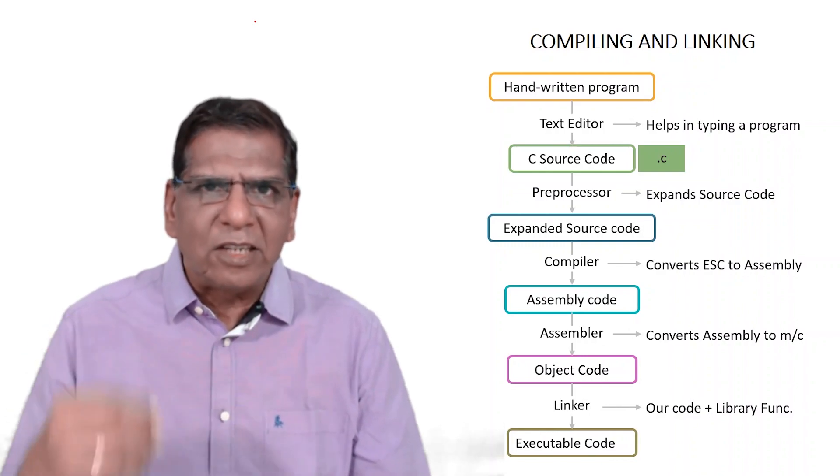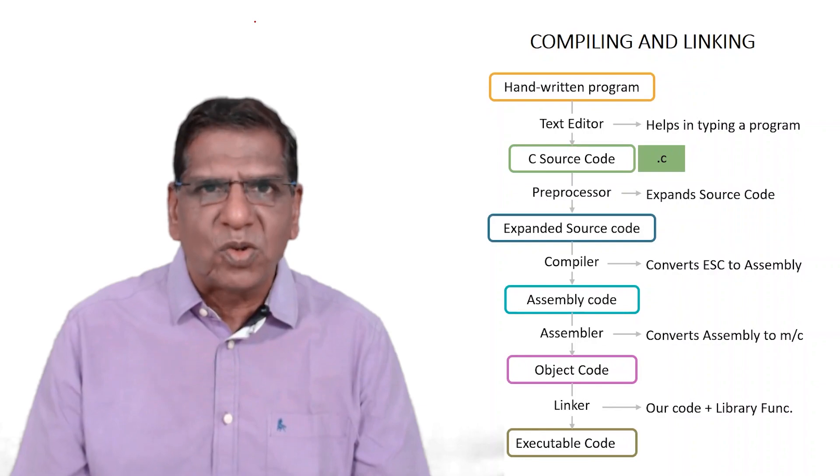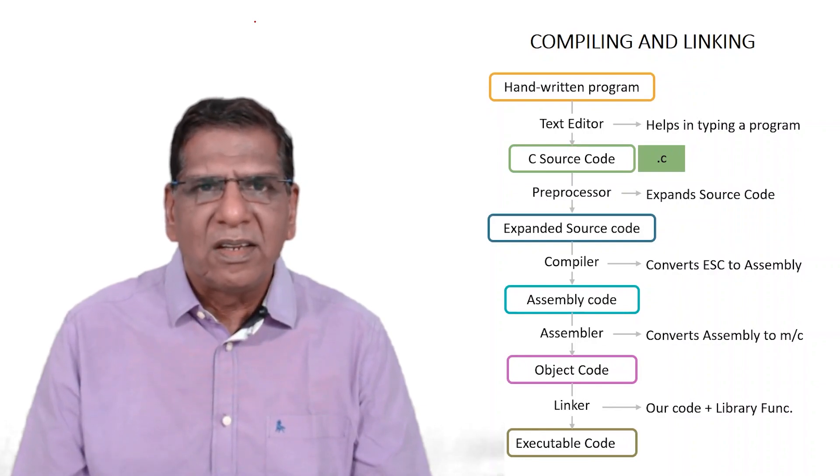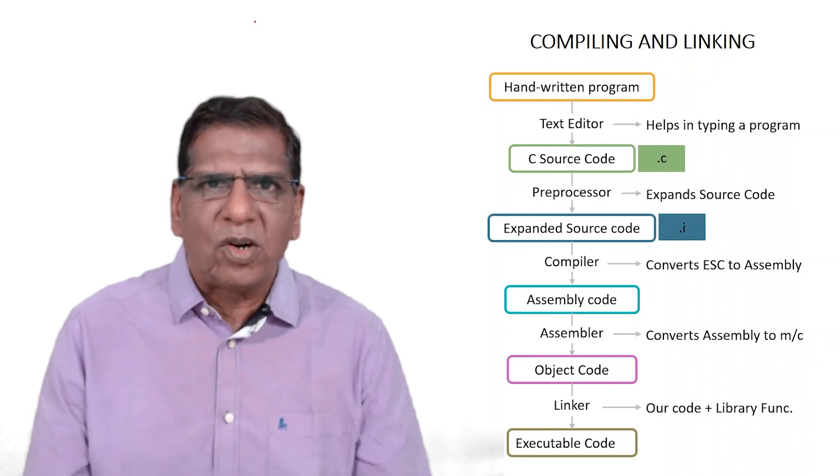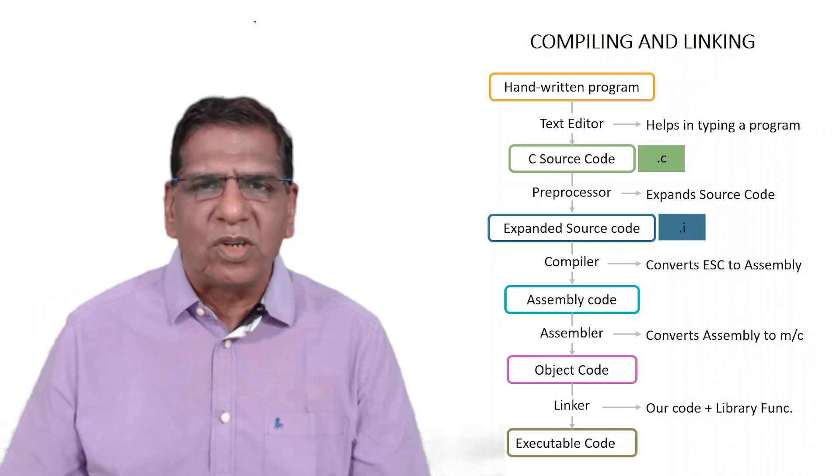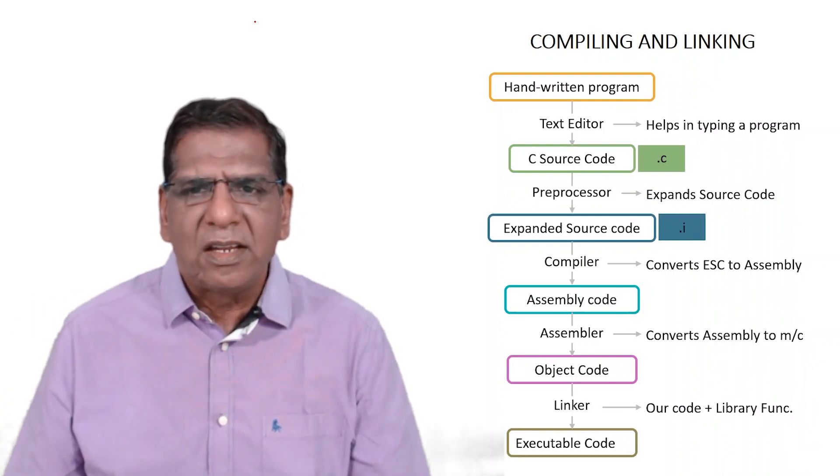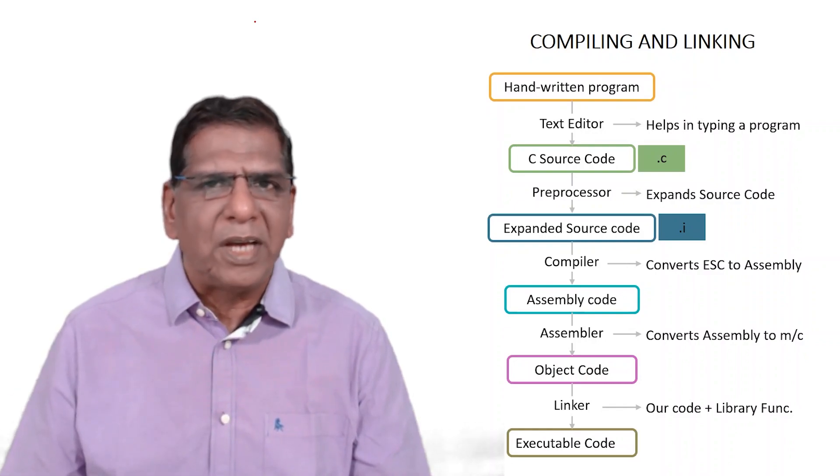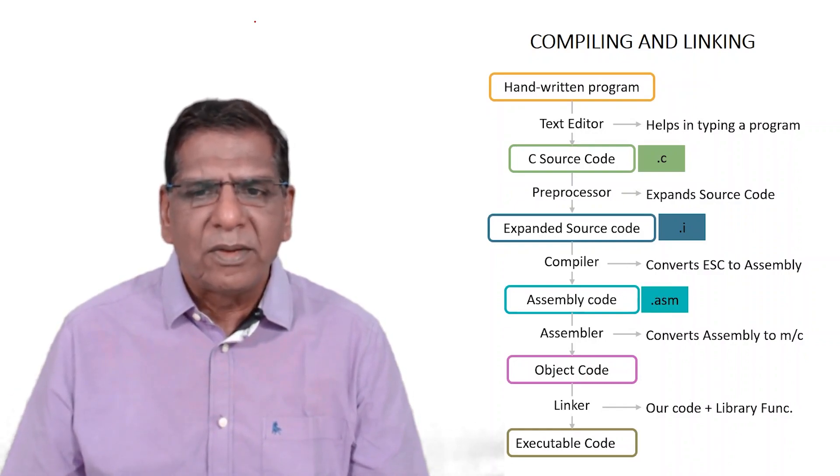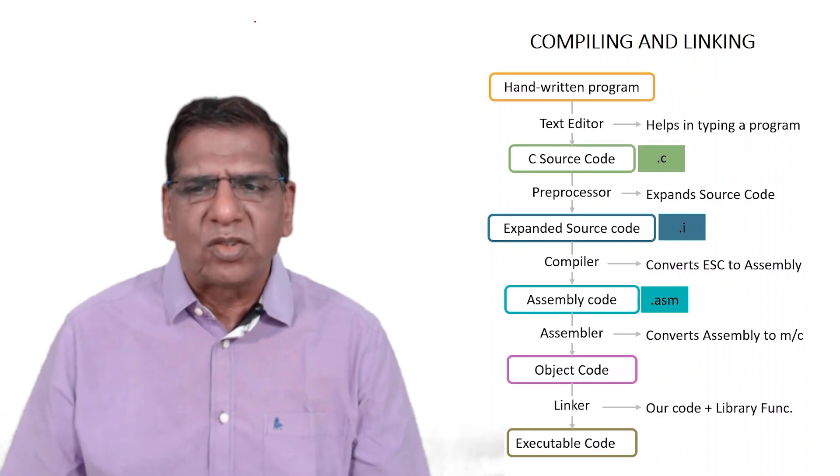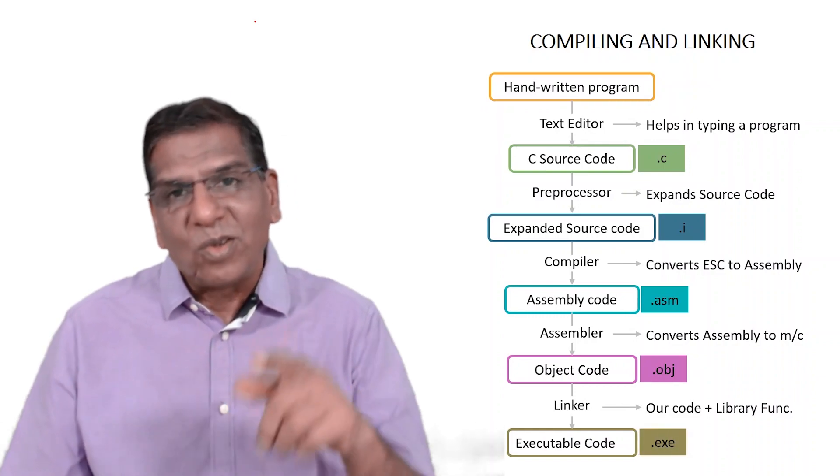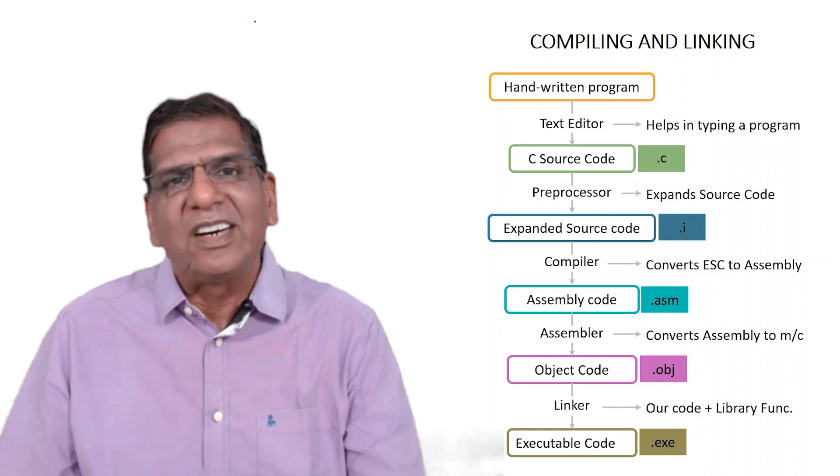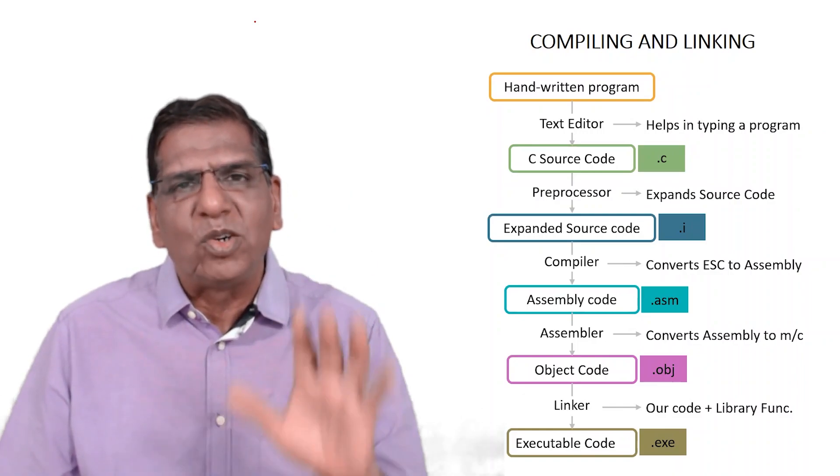When the expanded source code is created by the preprocessor, it will also have to be stored in a file. It will usually have extension .i. So PR1.c on expansion will get stored in PR1.i, which on compilation will get stored in PR1.asm, which on assembly will get stored in PR1.obj, which on linking will get stored in PR1.exe. So all these different files get created for every single program that you build.